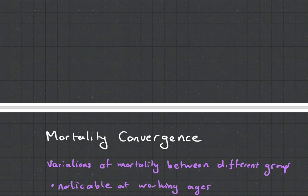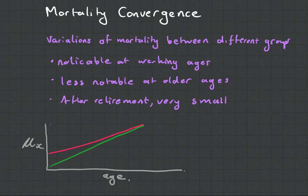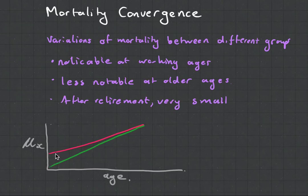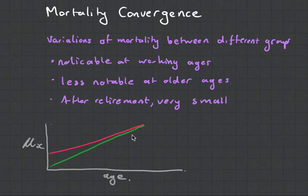Finally, let's talk about mortality convergence. Let's say there's a difference between two groups — a rich accountant versus a normal plumber. Their mortality difference is going to be very noticeable at their working ages, because the plumber is exposed to germs and physical risks, whereas the rich accountant has a nice fancy office. However, what we see is that if the red line is the plumber and the green line is the accountant, as time goes on their mortality rates seem to converge, and the effect of the difference in their social class diminishes, such that all old people experience mortality at roughly the same rate.